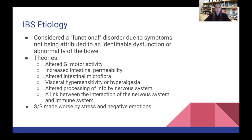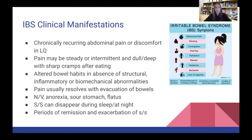Signs and symptoms are made worse by stress and negative emotions. Symptoms are chronically recurring abdominal pain or discomfort — steady or intermittent, dull and deep with sharp cramps after eating. Patients also experience altered bowel habits in the absence of structural, inflammatory, or biomechanical abnormalities, which is why it's considered a functional disorder. Pain usually resolves with evacuation of the bowels. Individuals can also experience nausea, vomiting, anorexia, sour stomach, and flatulence. Symptoms usually disappear during sleep, with periods of remission and exacerbation.